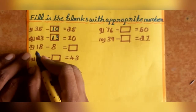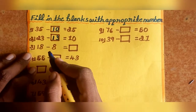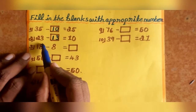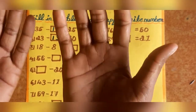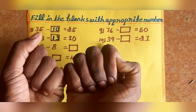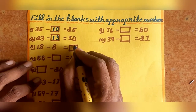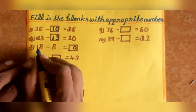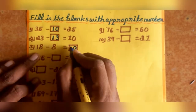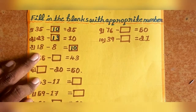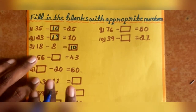Next, third one: 8 blank minus 8. First, units place: 8 minus 8. In 8 you can less 8 also. Balance is 0.